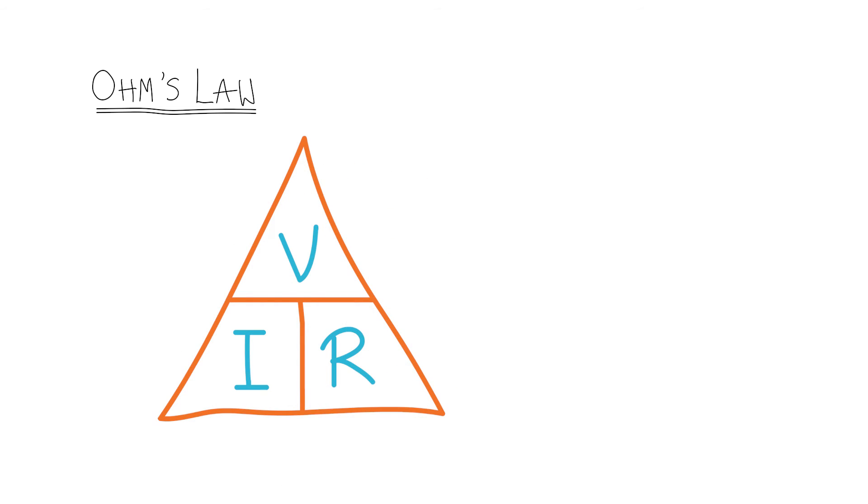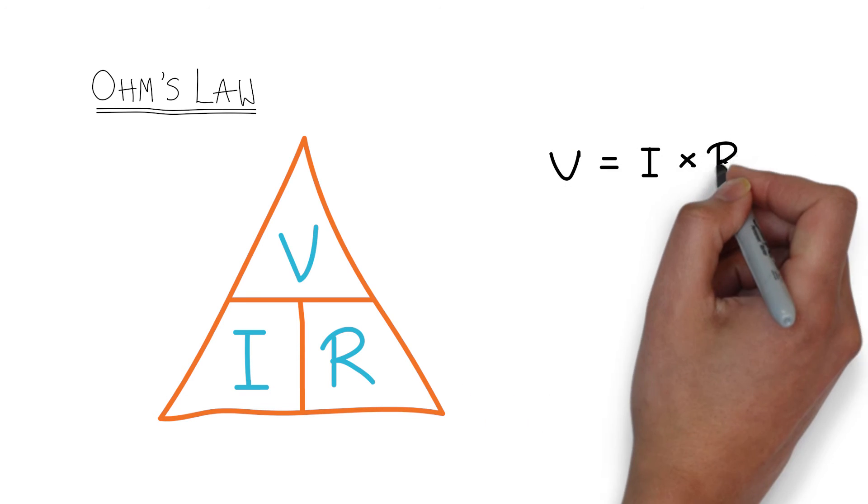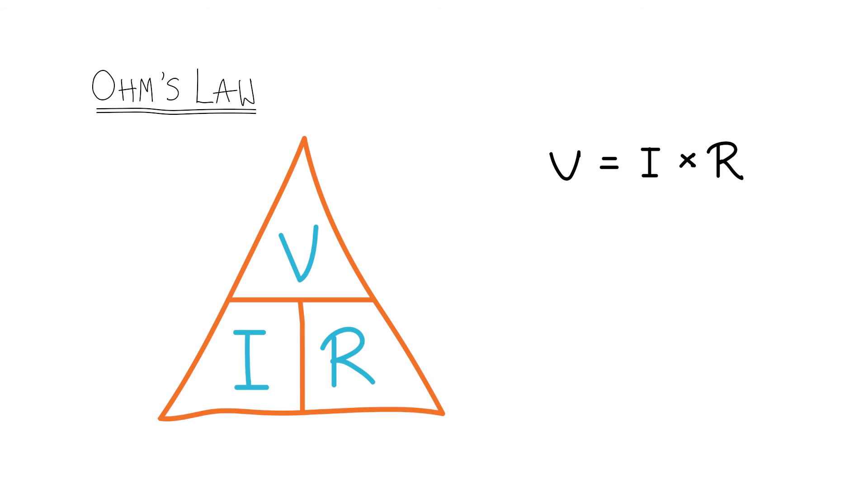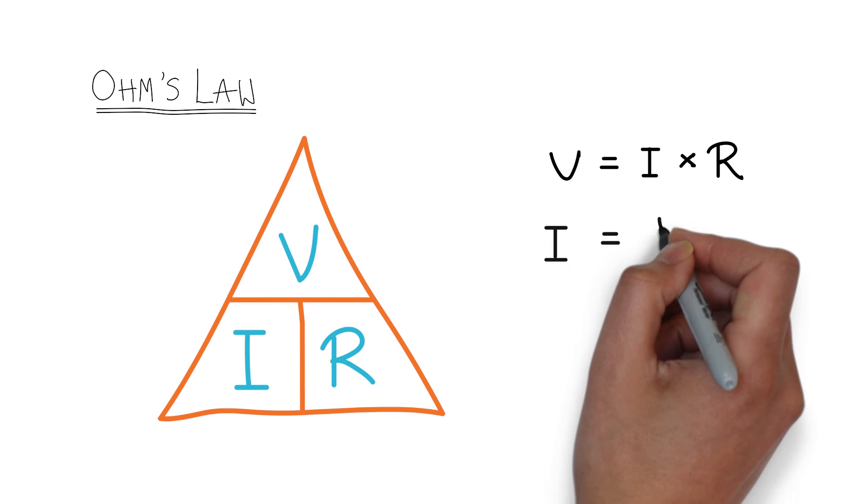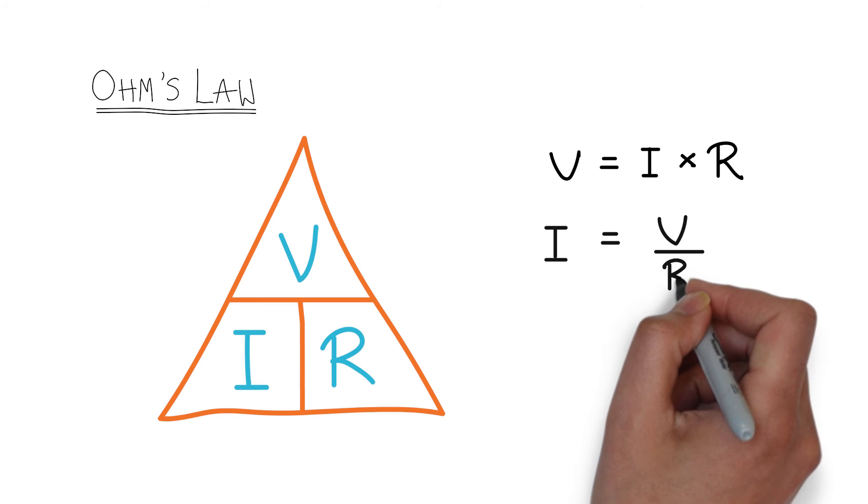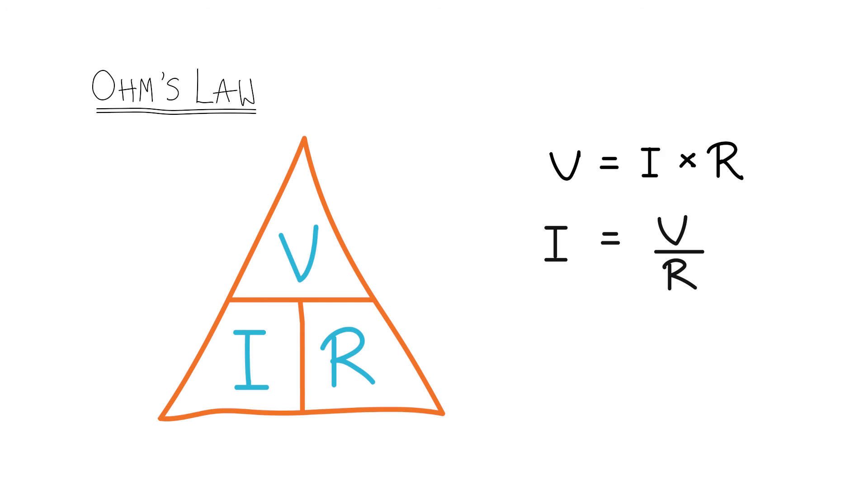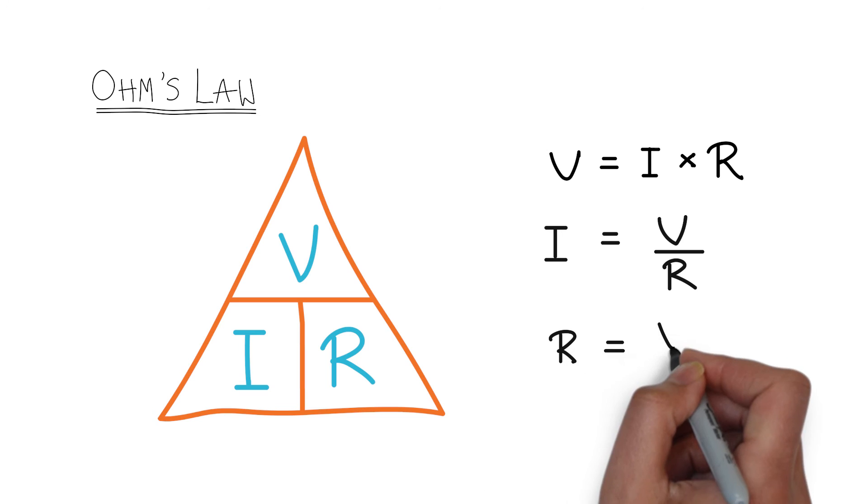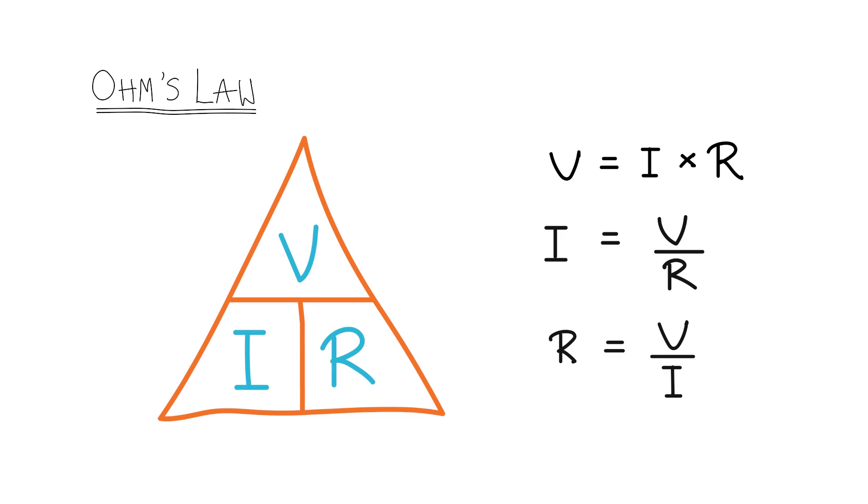If you remember your school algebra, you can rearrange the terms in a simple formula such as Ohm's law to create other equivalent formulas. If you don't know the voltage, you calculate it by multiplying the current by the resistance. If you don't know the current, you can calculate it by dividing the voltage by the resistance. If you don't know the resistance, you can calculate it by dividing the voltage by the current.